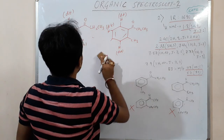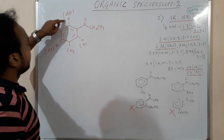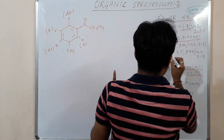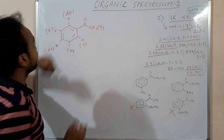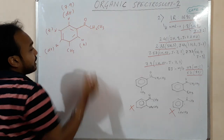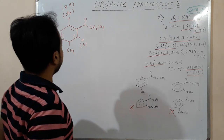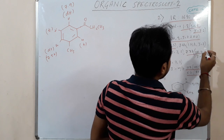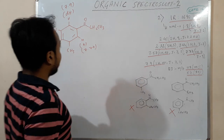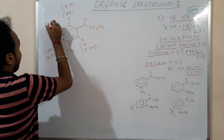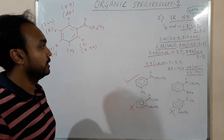So the ethyl group will be in the meta position. Now assigning the values for doublet of triplet — we have 7.57 and 7.9. The hydrogen adjacent to the electron withdrawing group will have a value of 7.9, and the other doublet of triplet will be 7.57. For the two triplet hydrogens, one value is 7.77 (adjacent to electron withdrawing group) and the other is 7.44. So the correct option is the first one — the meta-substituted structure.